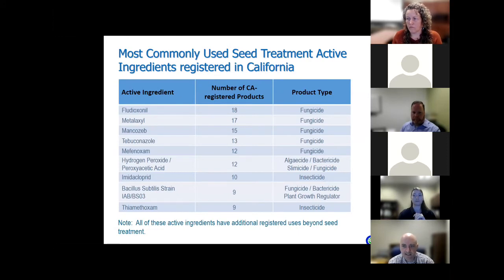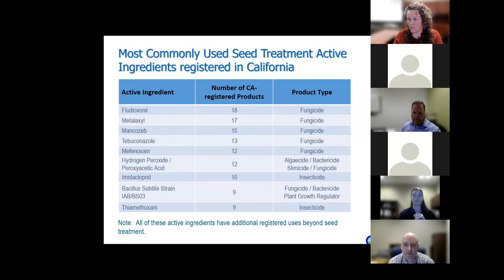Along with the variety of registered seed treatment products, there are also many different active ingredients. There are 68 active ingredients registered for use in seed treatment products in California. Fungicides show up with the most frequency, and there are also a fair number of insecticide products, as well as products with algaecide, bactericide, slimicide, and plant growth regulator claims. Although hydrogen peroxide and peroxyacetic acid are distinct active ingredients, I've grouped them together because all 12 registered products contain both. In addition to seed treatment use, all of these active ingredients also have other uses, such as plant or soil applied fungicides and insecticides.